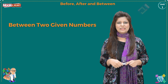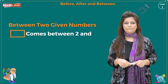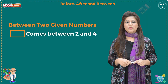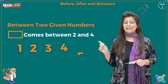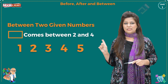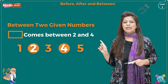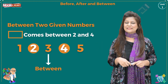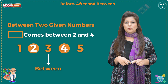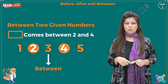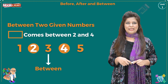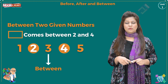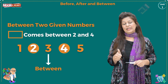To find between the given two numbers — for example, which number comes between 2 and 4? Just check it out; this is written over here, you can see. Yes, number 3 will come between 2 and 4. Fantastic, good job students!